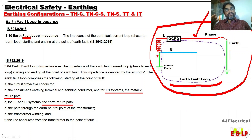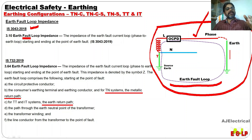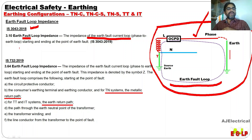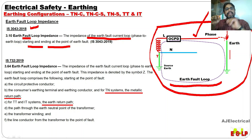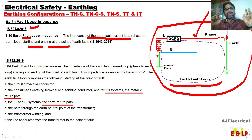If the fault current is high, the OCPD will trip faster. As per IS 3043, the Earth fault loop impedance is the impedance of the Earth fault current loop, or we call it the phase-to-Earth loop, starting and ending at the point of Earth fault. The starting and ending at the Earth fault point gives us a loop, and the impedance of that loop is called Earth fault loop impedance.